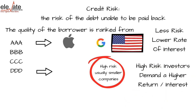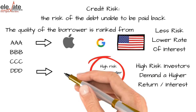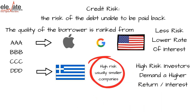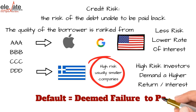The same applies to governments. The U.S. government is considered one of the safest borrowers — they have never defaulted on their payments. On the other hand, countries like Greece and Venezuela have shaky economies and must offer high interest rates, otherwise no one will buy their debt. When a company or country is high risk, they're considered subject to default, which means they can't make their payments.